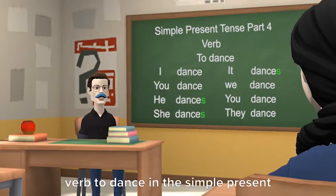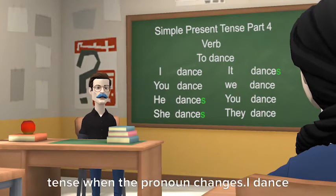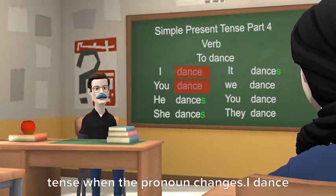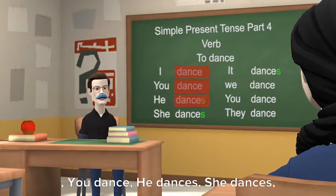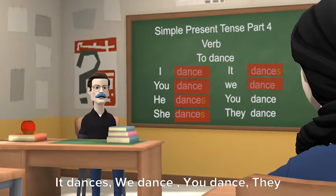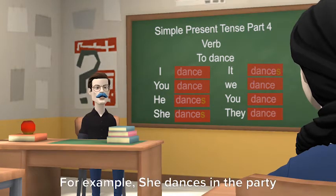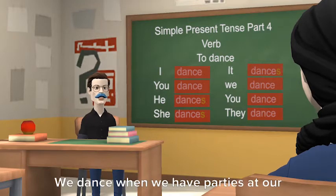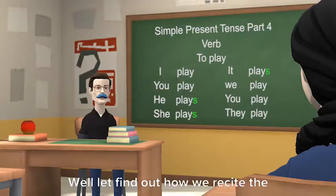When the pronoun changes: I dance, you dance, he dances, she dances, it dances, we dance, you dance, they dance. For example: She dances at the party every Saturday. We dance when we have parties at our place. To play — let's find out how we recite the verb 'to play' in the simple present tense.